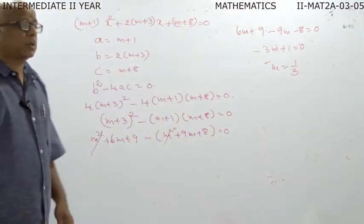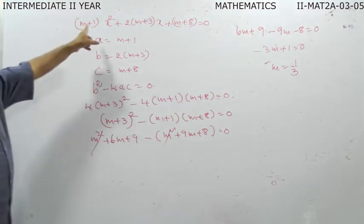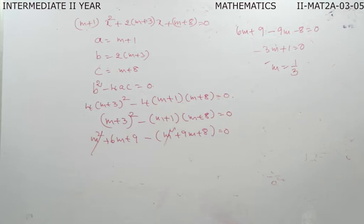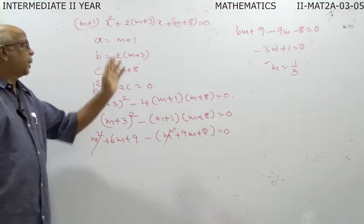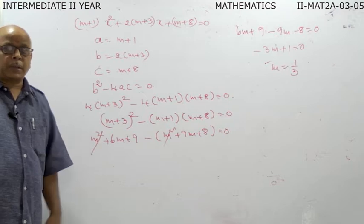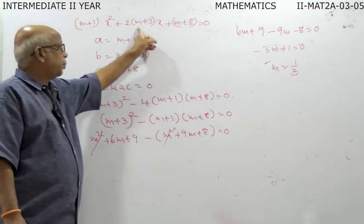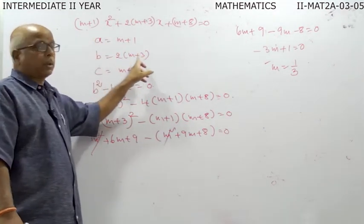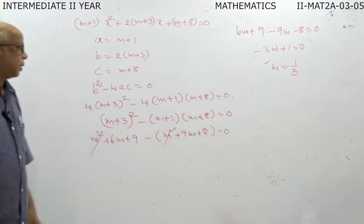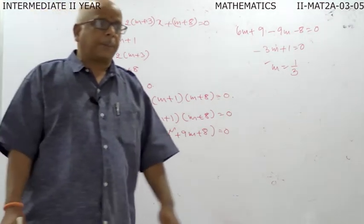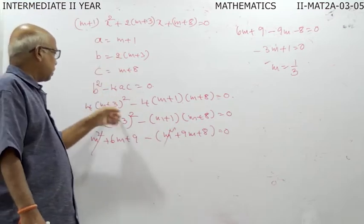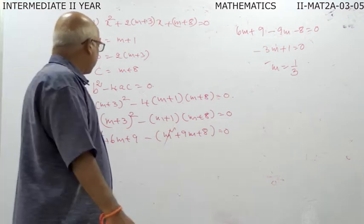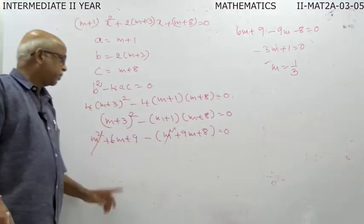m is equal to 1 by 3. Let us verify this once again. The given equation is m plus 1 into x-squared plus 2 into m plus 3 into x plus m plus 8 equal to zero. Here a equals m plus 1, b equals 2 into m plus 3, c equals m plus 8. Applying b-squared minus 4ac equal to zero: 2 into m plus 3 whole square minus 4 into m plus 1 into m plus 8, and after cancelling 4, we get m-squared plus 6m plus 9.